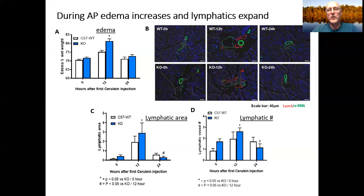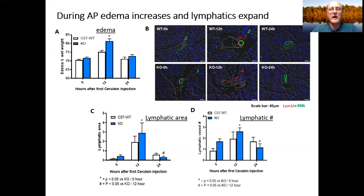These data were quantitated and are presented at the bottom. In C, we looked at lymphatic area, and just as we saw with edema, there was an increase in lymphatic area in the wild-type in white, and in the knockout in blue, which was more severe and significant.